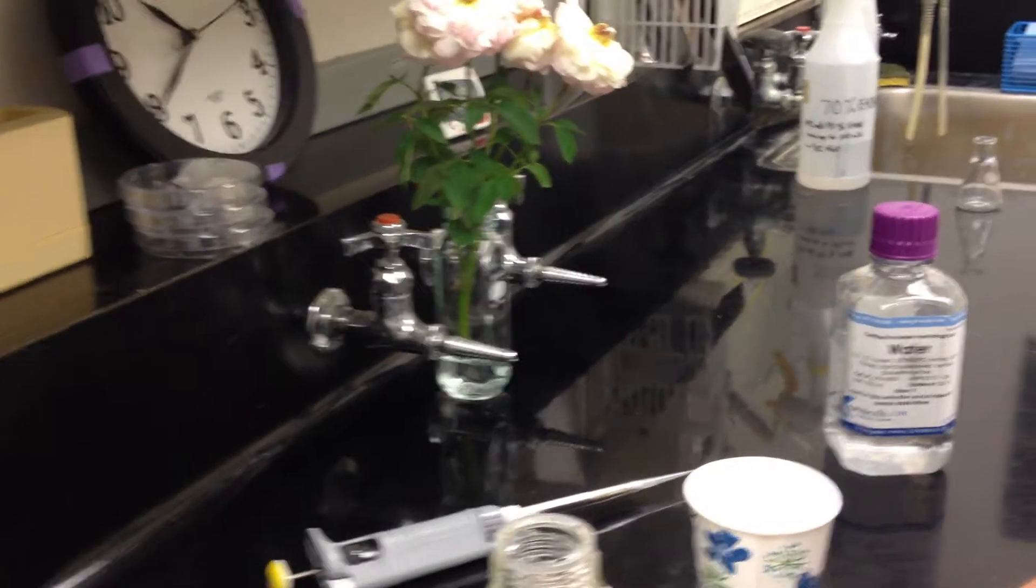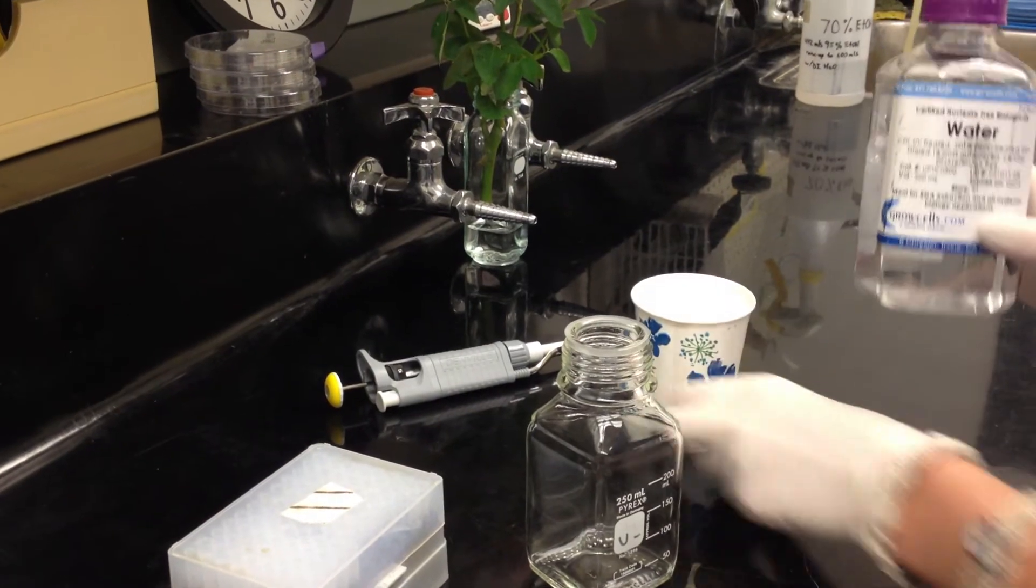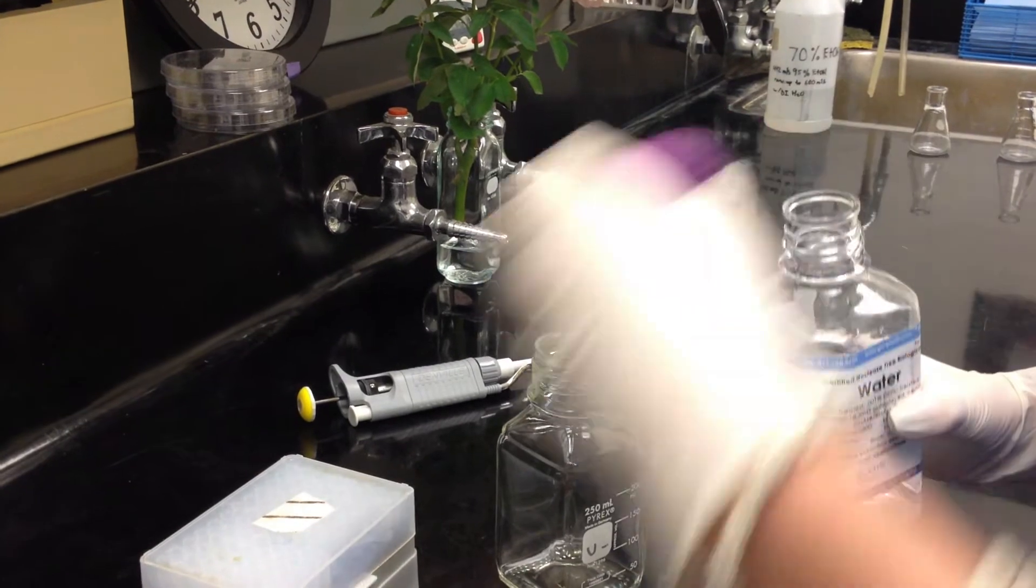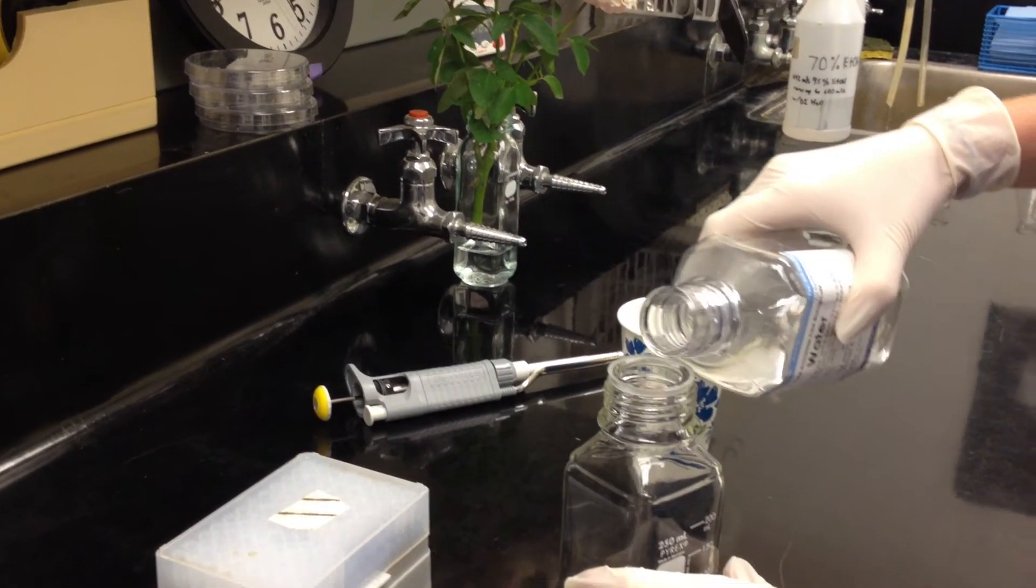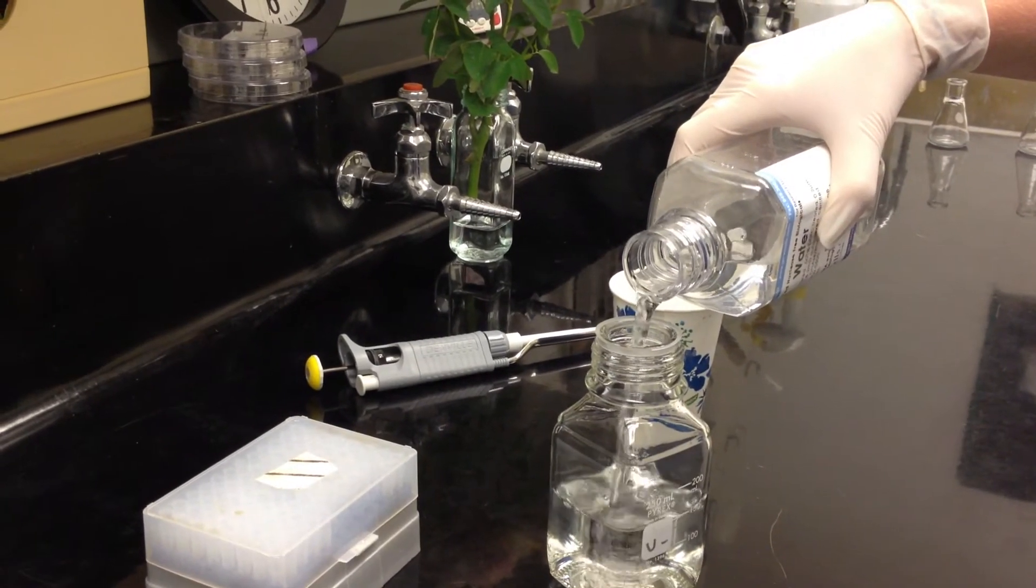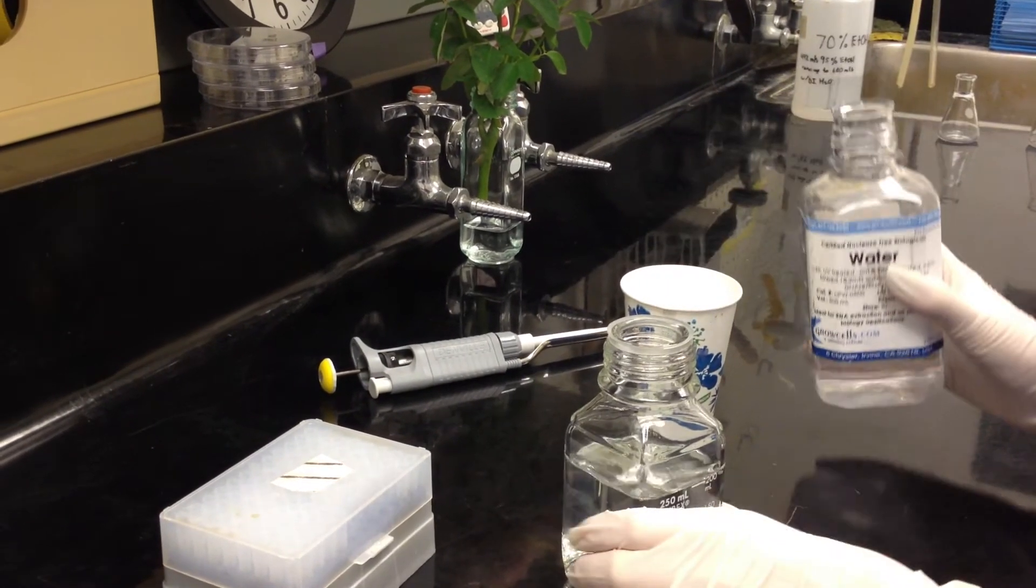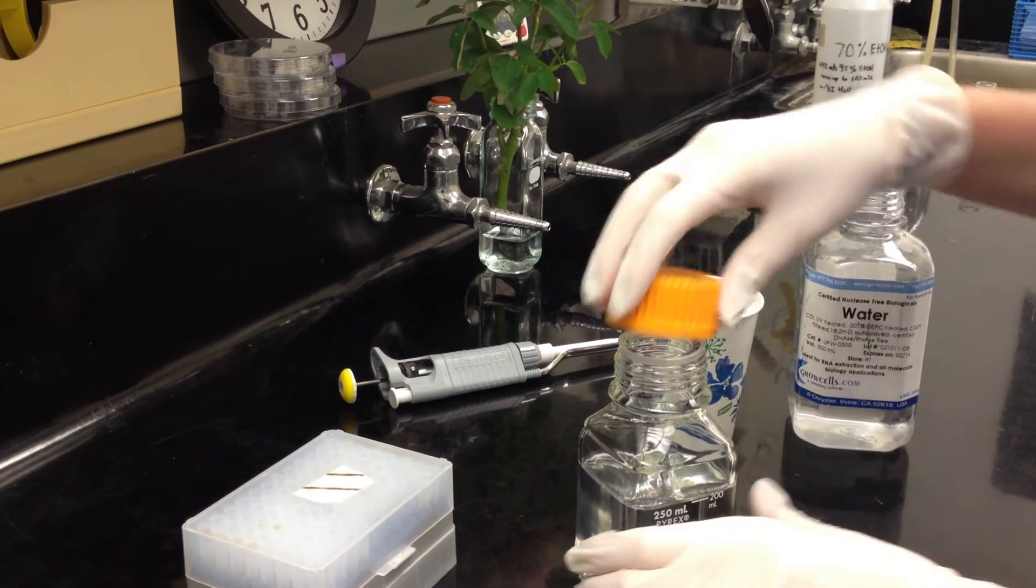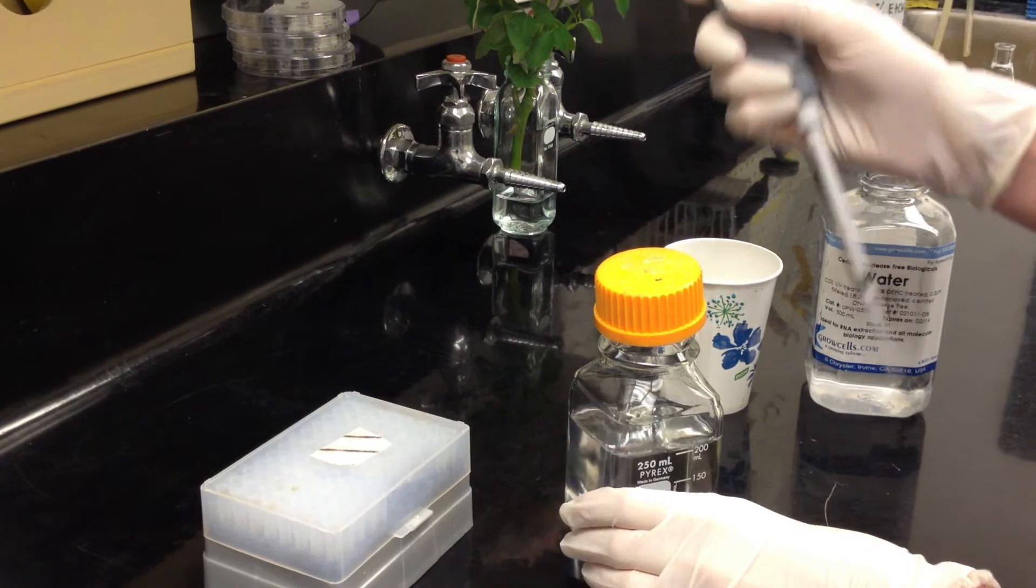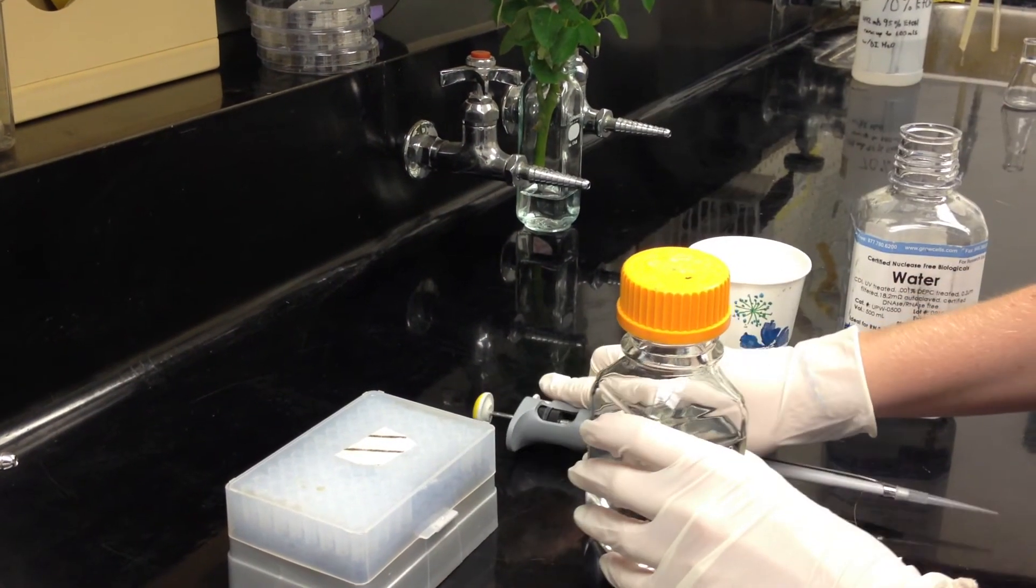Once you've used all this up and it's empty, you're going to add 200 milliliters again of this DEPC treated water. Refill it to the 200 mark, and then repeat all the steps one more time with the pipette, dispensing it 10 times and shaking it.